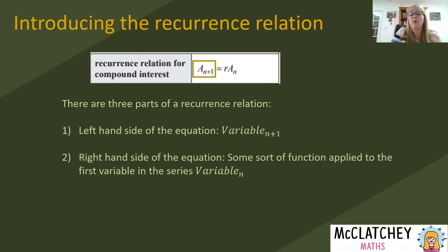On the right hand side of our equation we have some sort of function being applied to the term before and it's usually the first variable in the series being variable n. In this case it's the amount of money in the time period of n and then we apply some sort of function to it which is in this case multiplying it by r and then we get the next term in the series which is a subscript n plus 1.